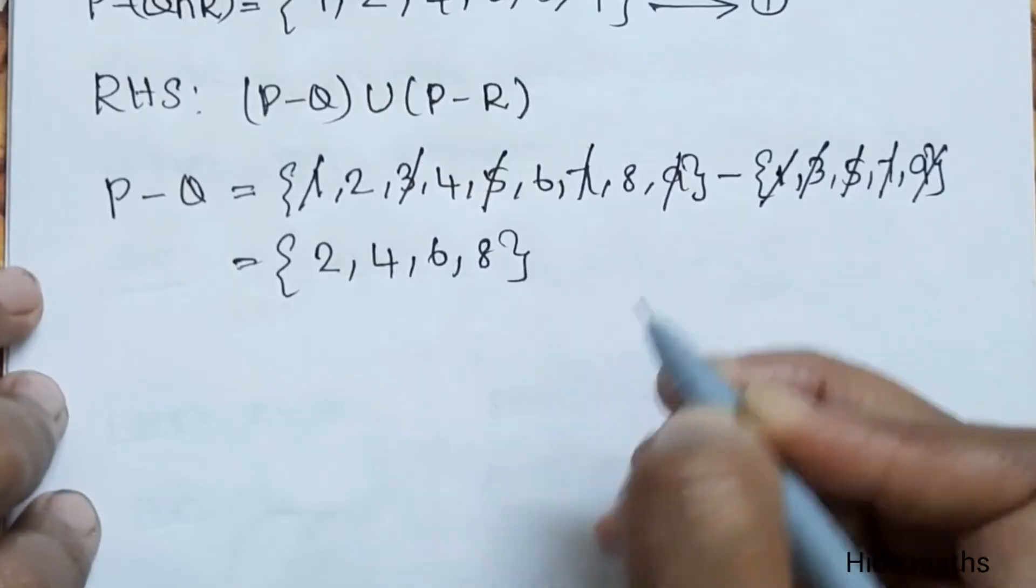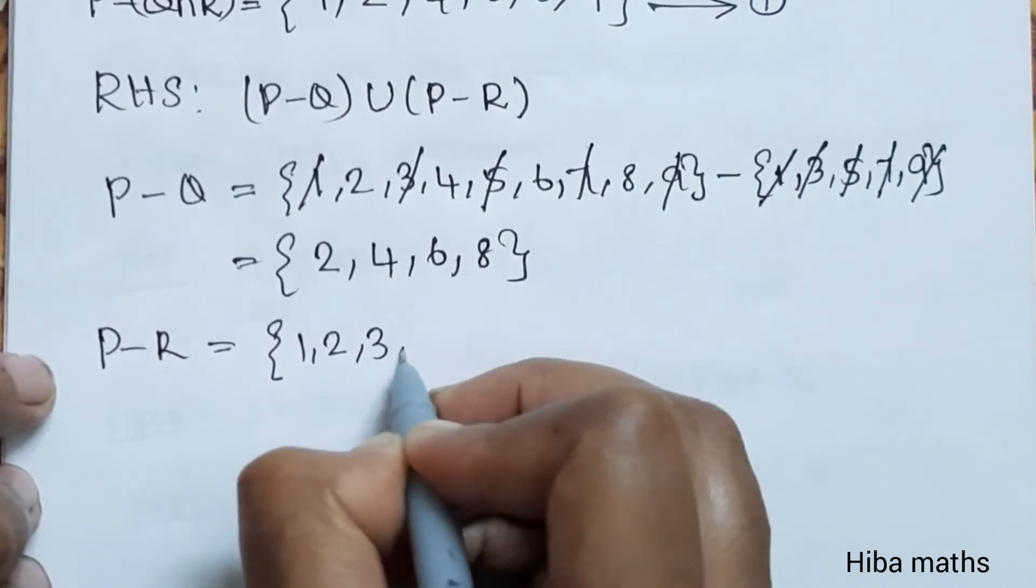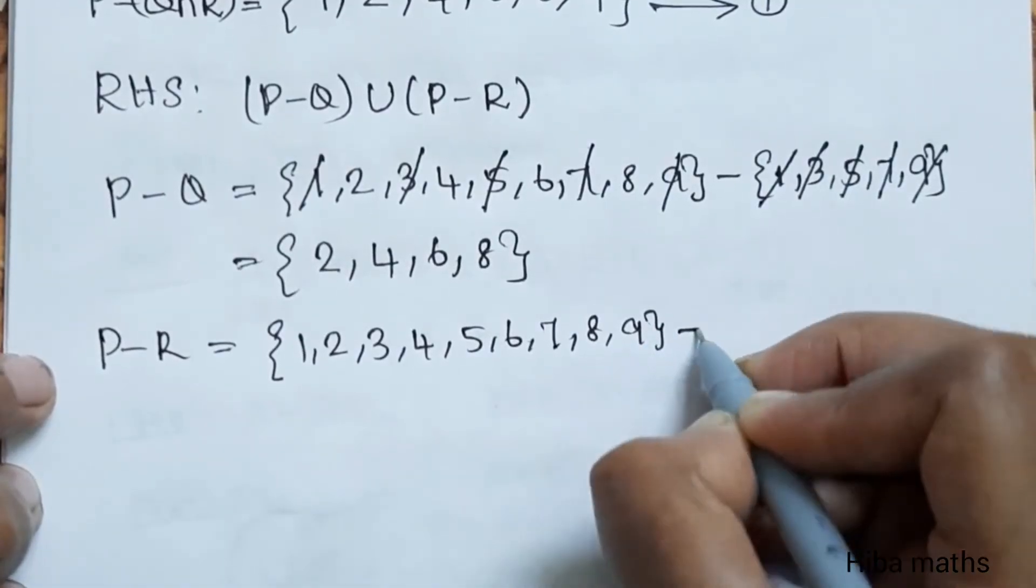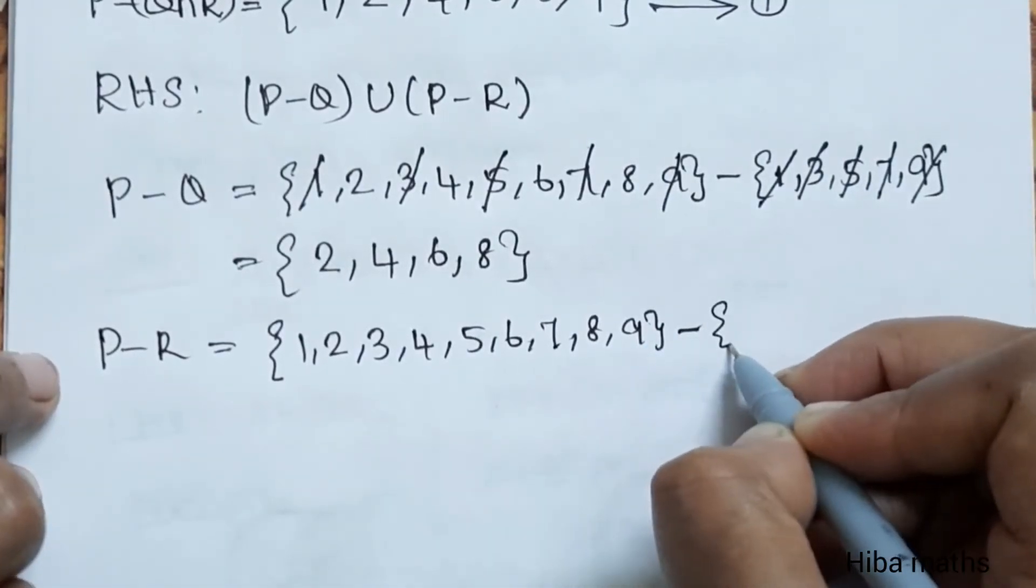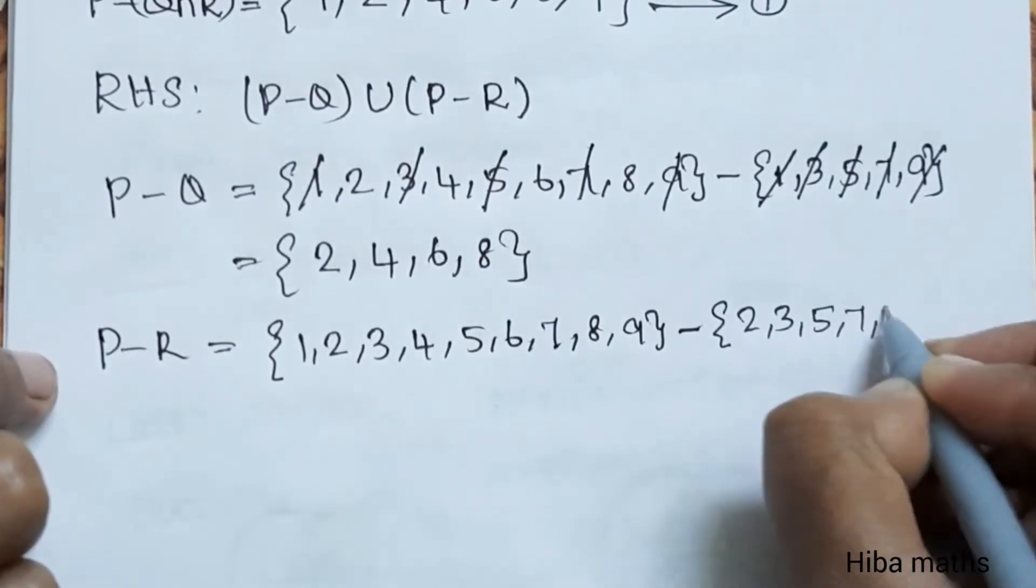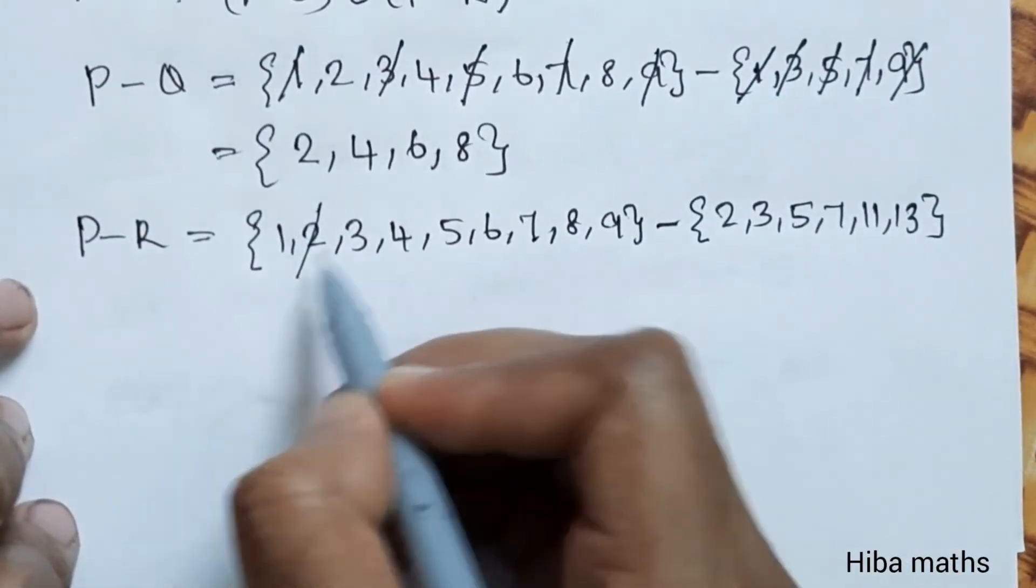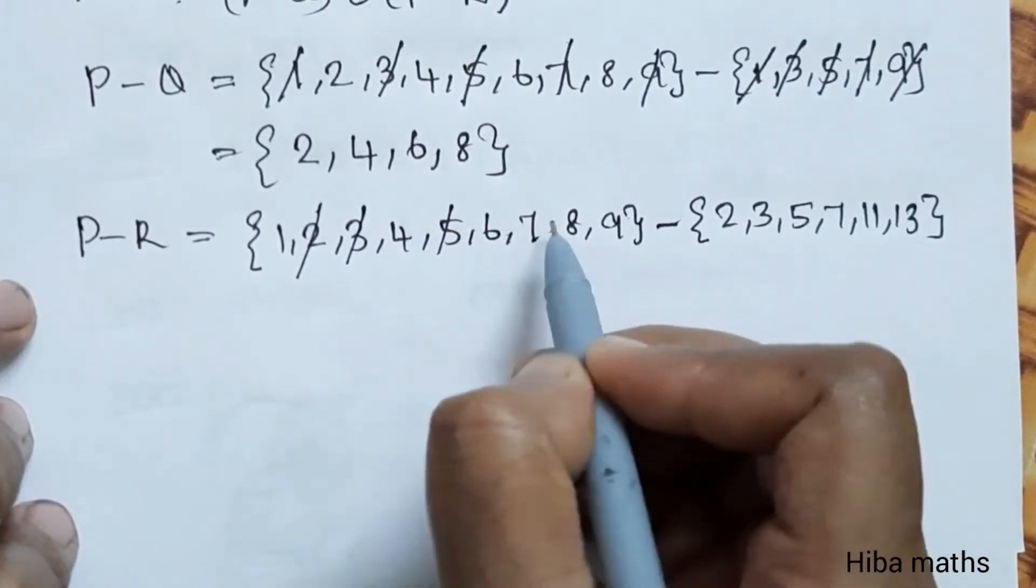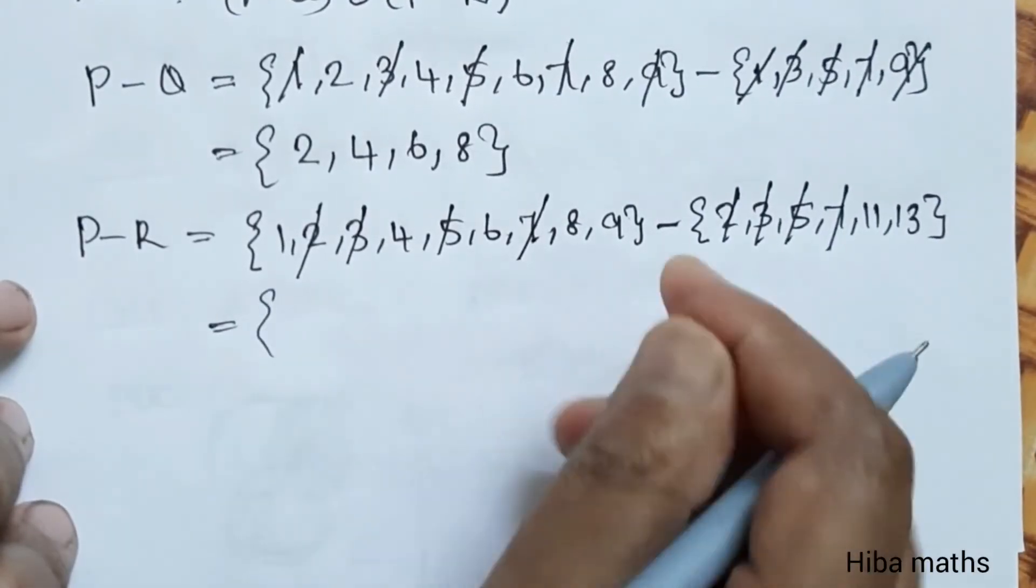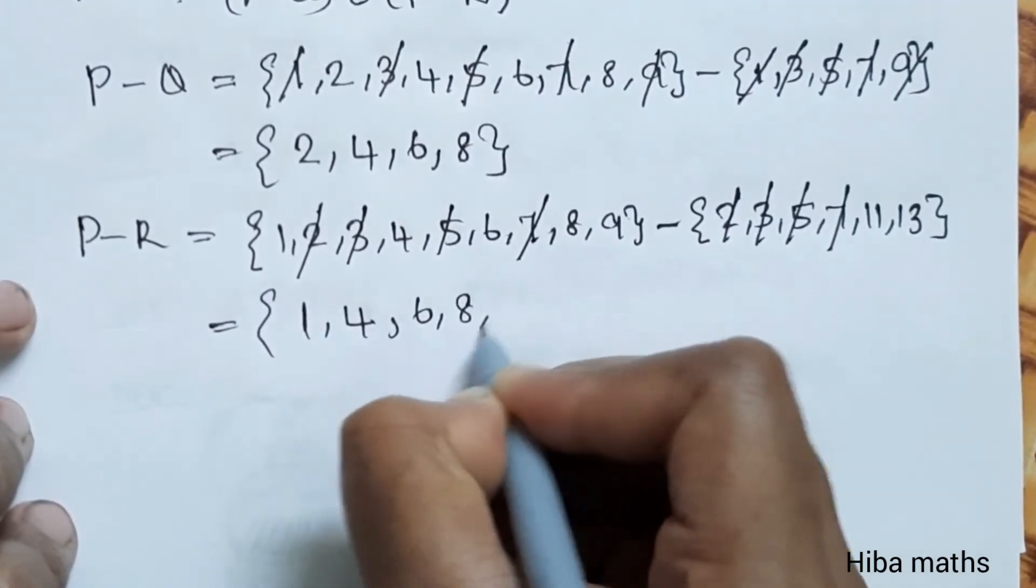P minus R: P value 1, 2, 3, 4, 5, 6, 7, 8, 9 minus R value 2, 3, 5, 7, 11, 13. Cancel common elements 2, 3, 5, 7. First set is 1, 4, 6, 8, 9.